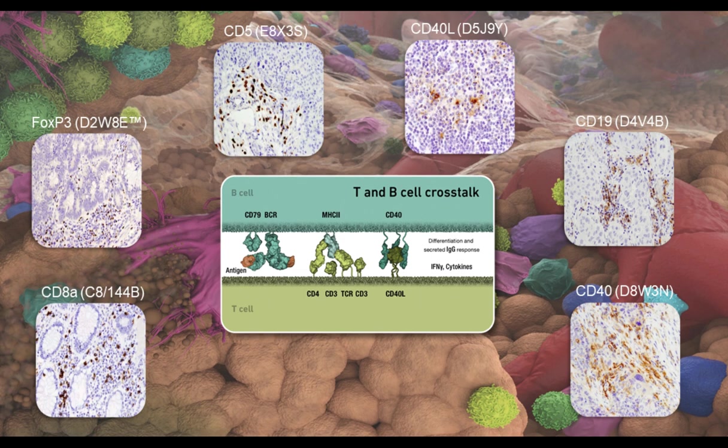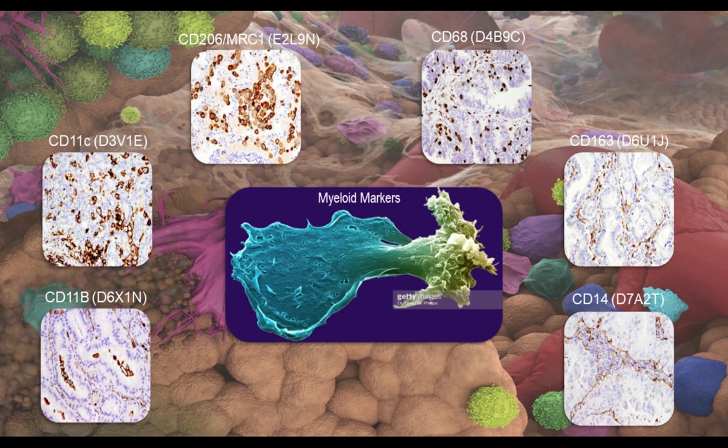We have targets to help researchers understand crosstalk between T and B cells, including the classic T-regulatory marker FOXP3, cytotoxic T-cell marker CD8, and markers such as CD19, CD40, and CD40 ligand. Finally, we have markers of myeloid cells including CD68, commonly used as a pan-macrophage marker; CD163, a marker of immunosuppressive macrophages; CD11C, a marker of dendritic cells; and other myeloid markers such as CD206 and CD14.